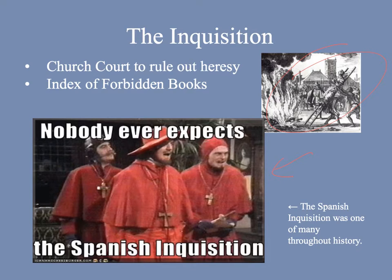One of the other things they tried to do to root out heretics was the Index of Forbidden Books — a list of works, books or essays, that were considered too immoral or not religious enough for Catholics to read. It included books by Luther and John Calvin, because they didn't want Catholics reading the works of Protestant leaders. While the church doesn't actively promote the Index anymore, it still exists in some form. As recently as the late 1990s and 2000s, Harry Potter books were discouraged in some Catholic circles because they dealt with sorcery, magic, and the dark arts.